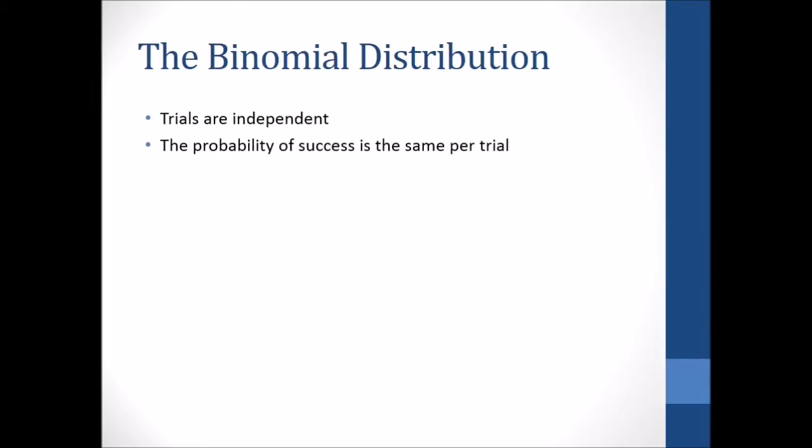The first thing is that the trials are independent. And the second thing is that the probability of success is the same per trial. Now let's take a look at what is the binomial distribution formula. So it's given here, and I know it's a lot. There's a combination there in the beginning and then a P where P represents success. And then 1 minus P represents a failure.